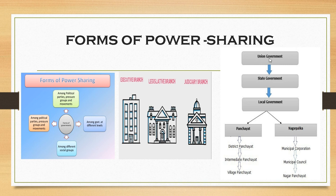Now, what is this arrangement known as? A general government is there for the entire country, and then there is a government at the regional level — that is the state or provincial level. Regional, state, and provincial are similar terms. Such an arrangement of government where there is a division of power between the central government and the regional government is known as federal division of power.